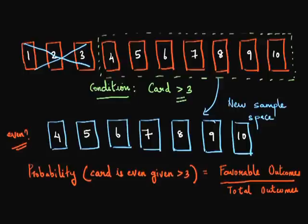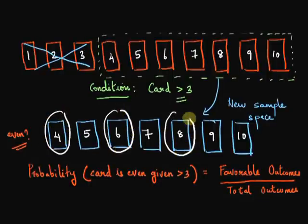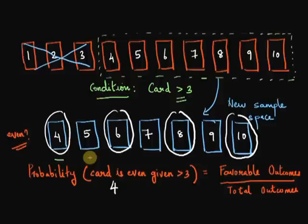So what are my favorable outcomes here? Even numbers in this set of cards. So that is 4, 6, 8, and 10. And this is to be divided by all the possible outcomes. So I have 1, 2, 3, 4, 5, 6, 7. Seven possible outcomes. So my conditional probability is 4 over 7.